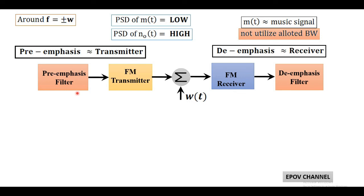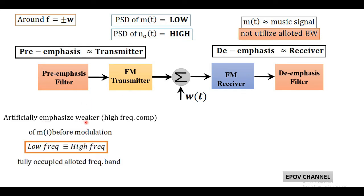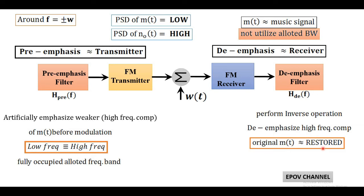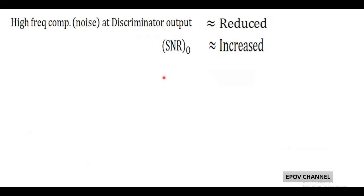First, at the transmitter side, weaker high frequency components of audio signal are boosted up before modulation using pre-emphasis filter denoted by H_pre(f). Similarly, at the receiver, demodulator output is passed through de-emphasis filter denoted by H_de(f). The performance of the de-emphasis filter is just inverse of pre-emphasis filter. This de-emphasis filter restores the original message signal by altering the high frequency component, and this process of pre-emphasis and de-emphasis maintains the desired message signal in its original form but reduces the noise power very effectively. We can say that at discriminator output, post-detection SNR increases very effectively and hence improves the noise performance in FM receiver.